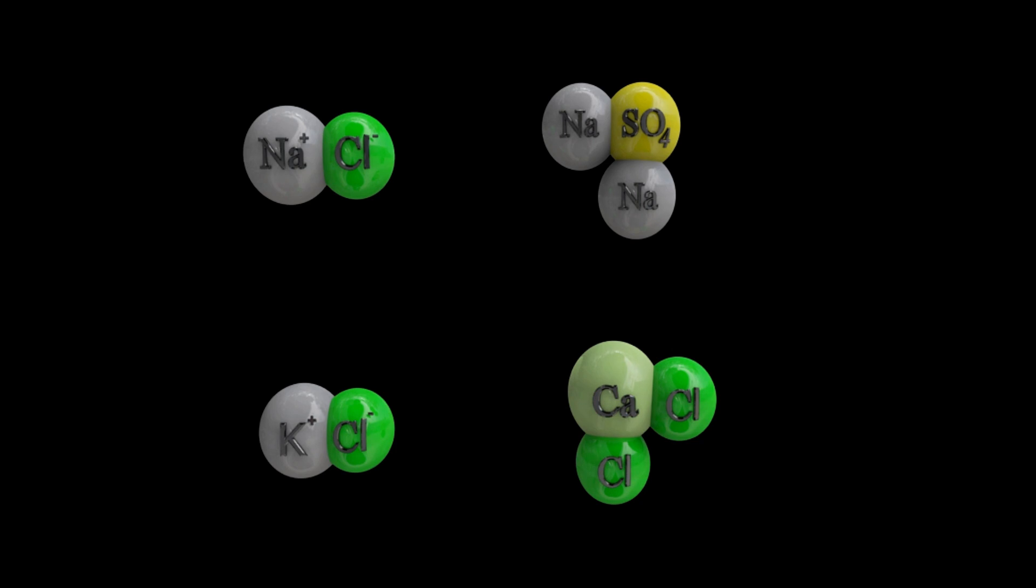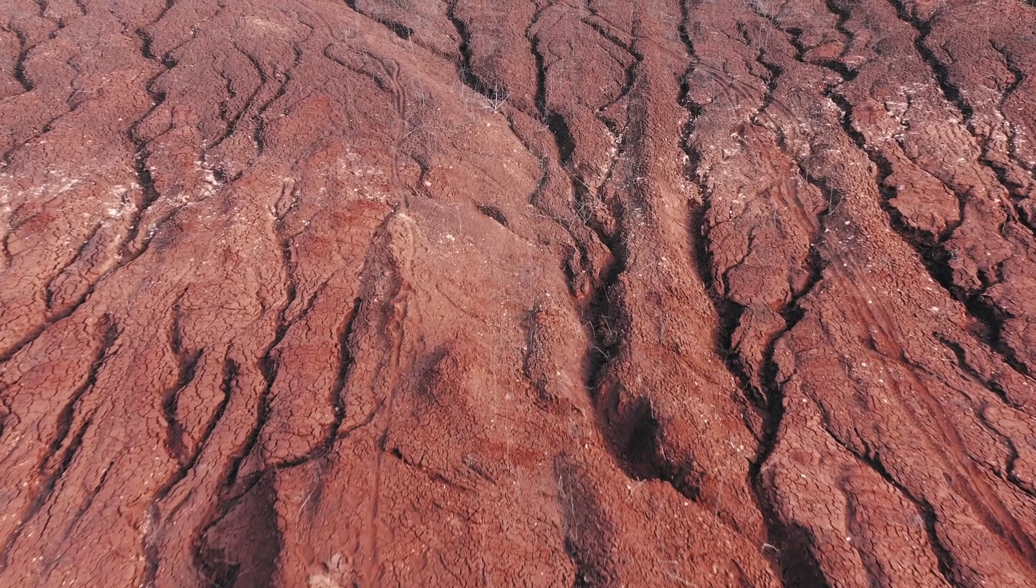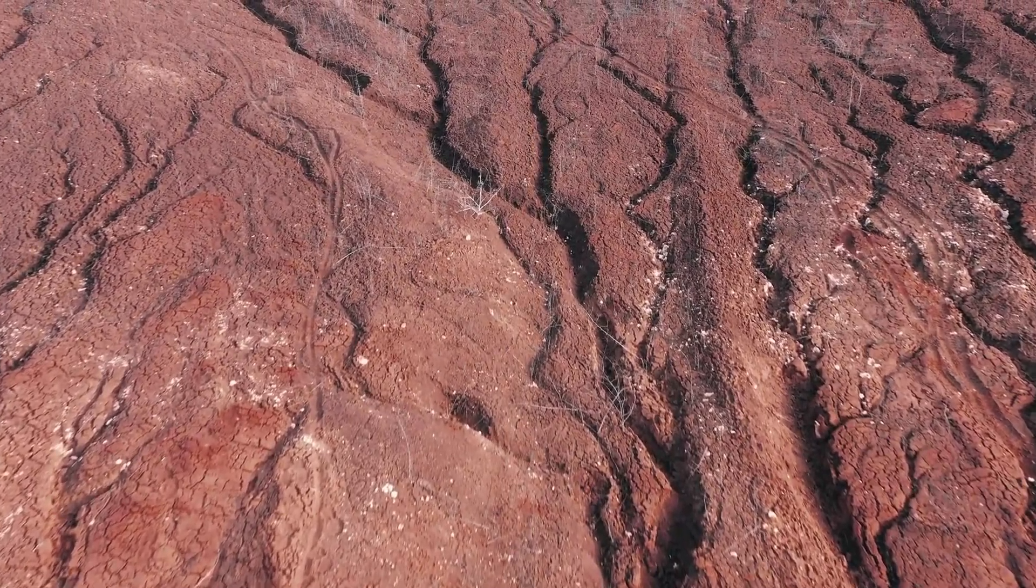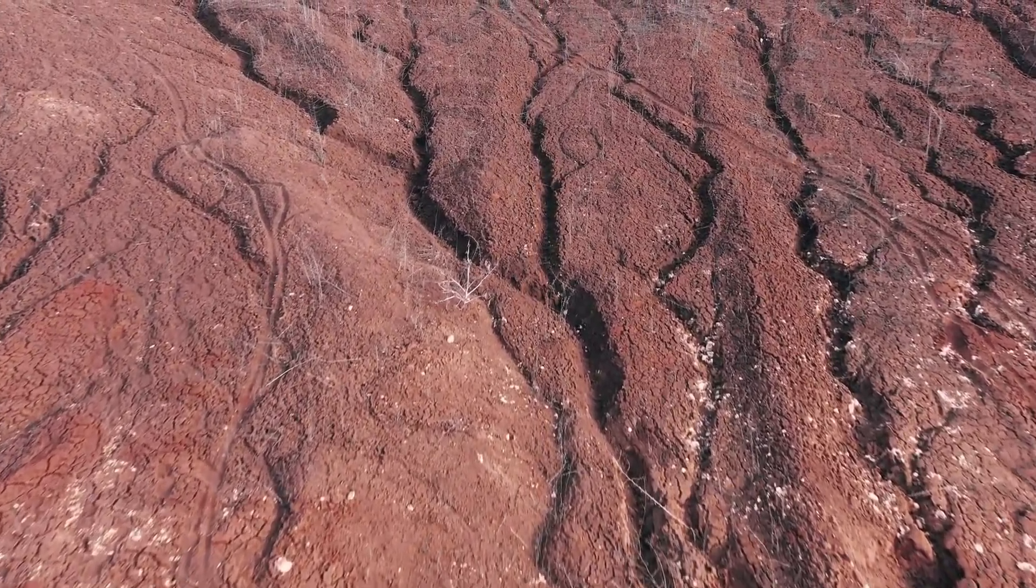The reddish tholins on Pluto might not only be coloring the landscape but could also represent the early stages of chemical evolution. This raises the tantalizing question of whether such processes occurring in an environment as extreme as Pluto could lead to the formation of life or its precursors.